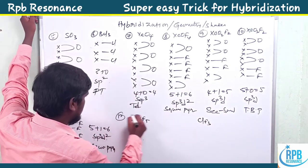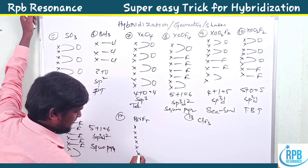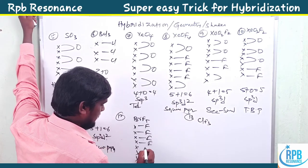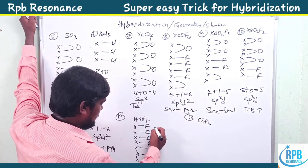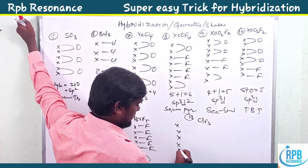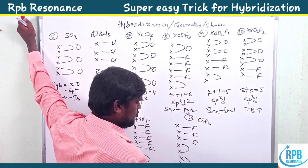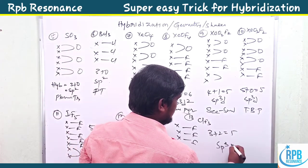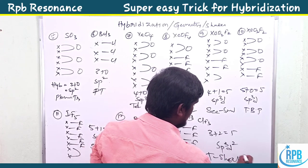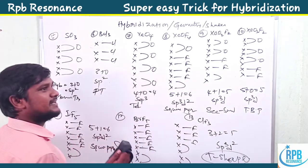For BrF5, bromine is in the seventh group with five fluorines and one lone pair — same as IF5, giving sp3d2, square pyramidal. For ClF3, chlorine is in the seventh group with three fluorines and two lone pairs: three plus two equals five — sp3d hybridization, and the shape is T-shaped.